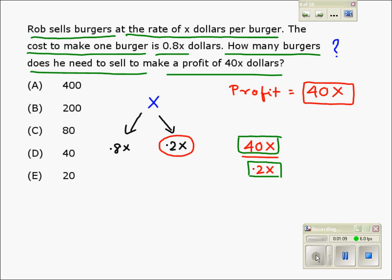Solving this equation will give us the required number of burgers. X can be cancelled, so we are left with 40 over 0.2. If we solve this, we get 400 divided by 2, which is 200.